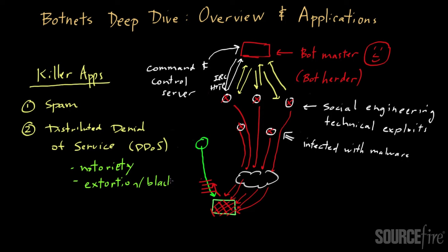In the extortion model, the bot master will threaten a website, telling them he's going to mount an attack and the only way to prevent it is if the website owner pays money. For example, say you're an online gambling site dealing with sports betting, and it's the day before the Super Bowl - your biggest day of business. If the bot master comes to you and says 'unless you pay me fifty thousand dollars, I'm going to bombard your site with traffic on the biggest gambling day of the year,' you may be inclined to pay him. You're really being blackmailed, and in exchange for that fee he won't try to take your site down on such an important day.